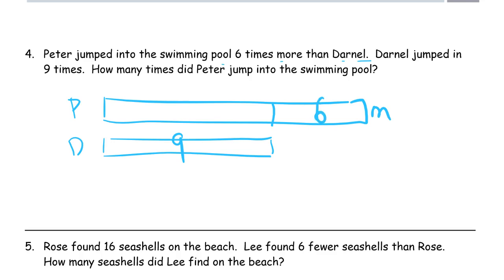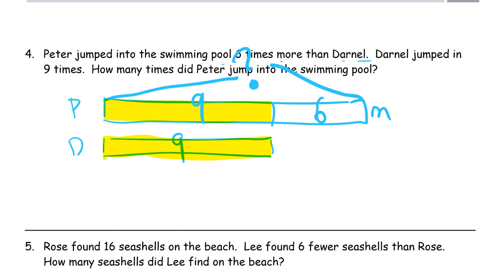What we don't know is the whole thing for Peter. So we know this six — we know the more. And then there's this part here. If we knew it, we would just add to the six and we'd know how many times Peter jumped in the pool. But we do know what it is because it's the same as Darnell's, and that's nine. So this has to be nine. So it's nine plus six — that's the whole thing. Nine plus six equals...